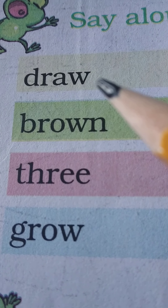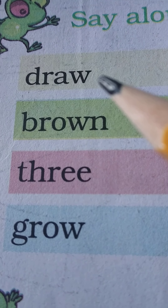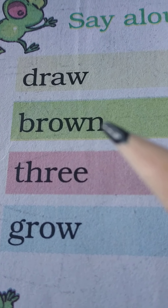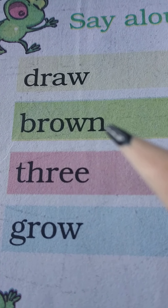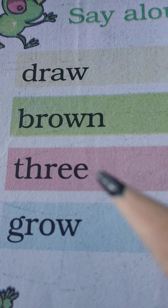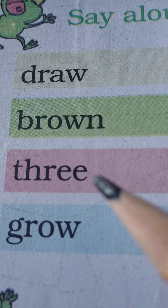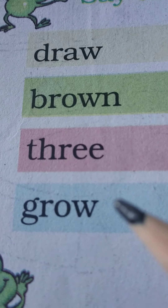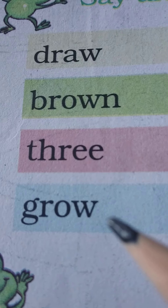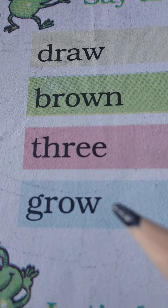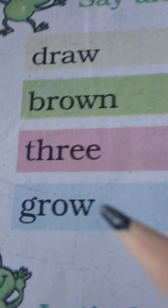Draw — to draw a picture. Brown — my hair is brown. Three — my room has three windows. Grow — plants grow when you water them.